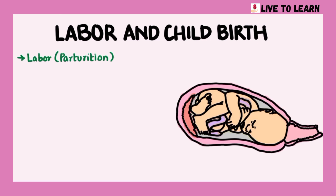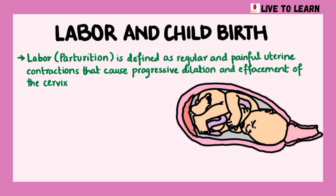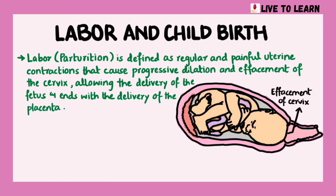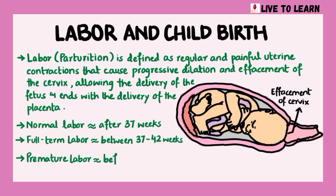Labor, also known as parturition, is defined as regular and painful uterine contractions that cause progressive dilation and effacement of the cervix, allowing the delivery of the fetus, and it ends with the delivery of the placenta. Normally, labor usually occurs after 37 weeks of gestation. Full-term labor occurs between 37 to 42 weeks of gestation, and premature labor occurs before 37 weeks of gestation.